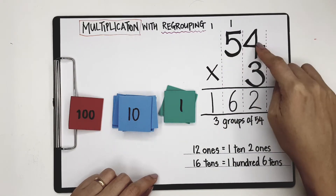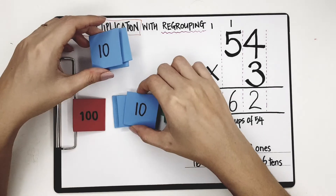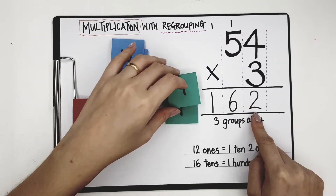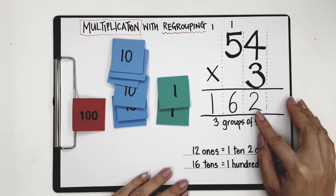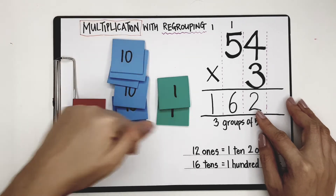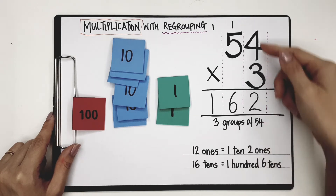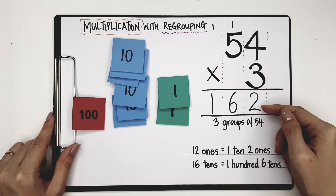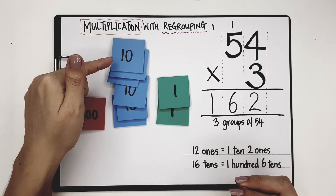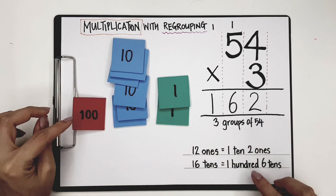So now 3 groups of 54 has given me 100 and 60 — 6 tens and 2 ones — which is 162. And that is what multiplication is: finding the total number in 3 groups of 54. Regrouping is when you have too many ones, you put them together and call them tens. Or if you have too many tens, you regroup them to become hundreds. That is multiplication with regrouping.